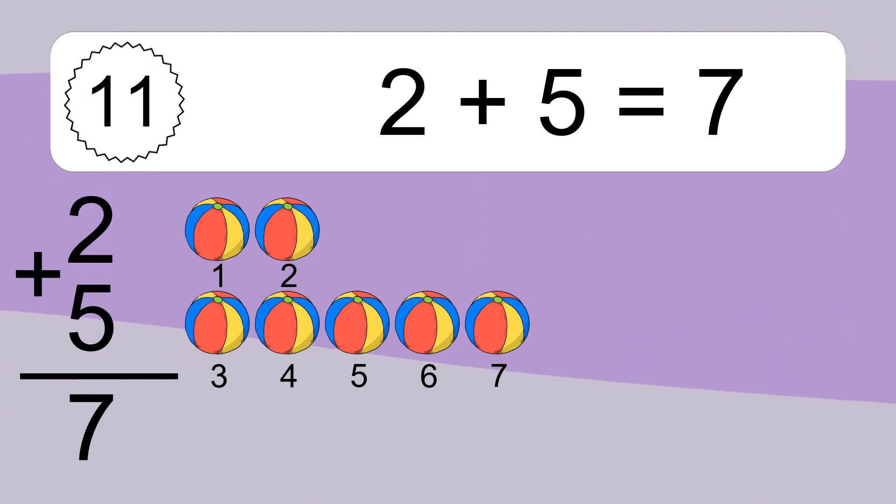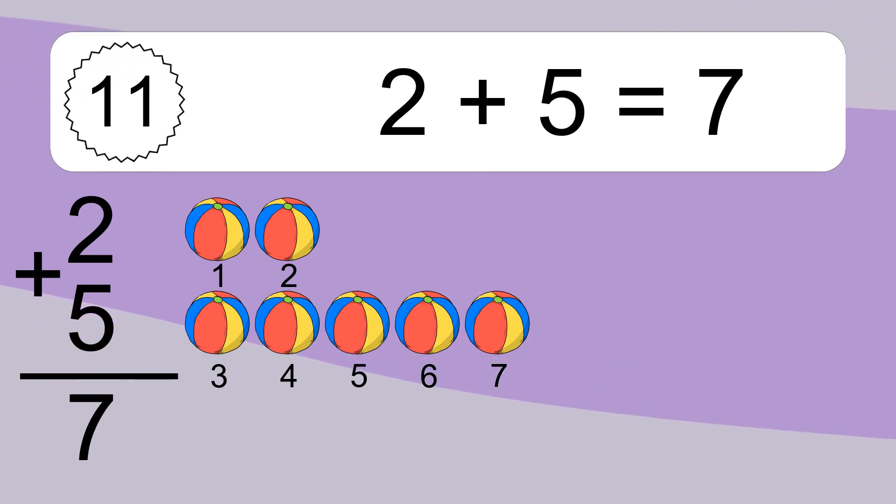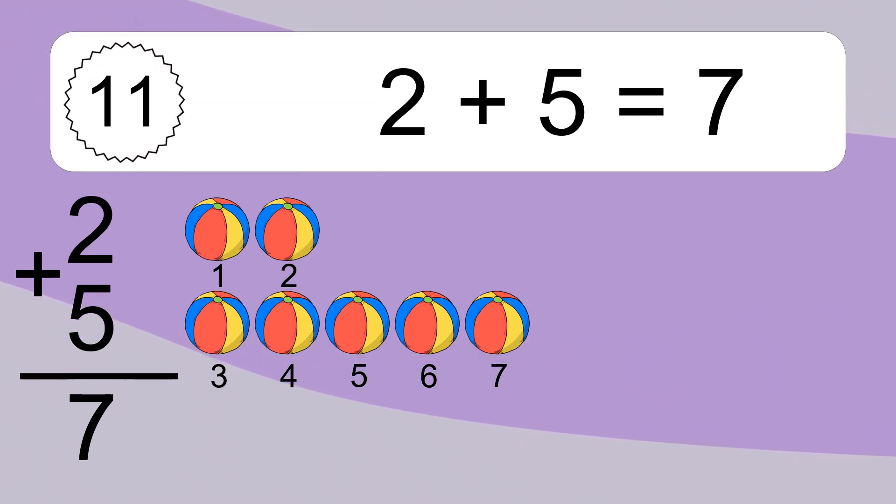2 plus 5 equals what? 1, 2, 3, 4, 5, 6, 7.